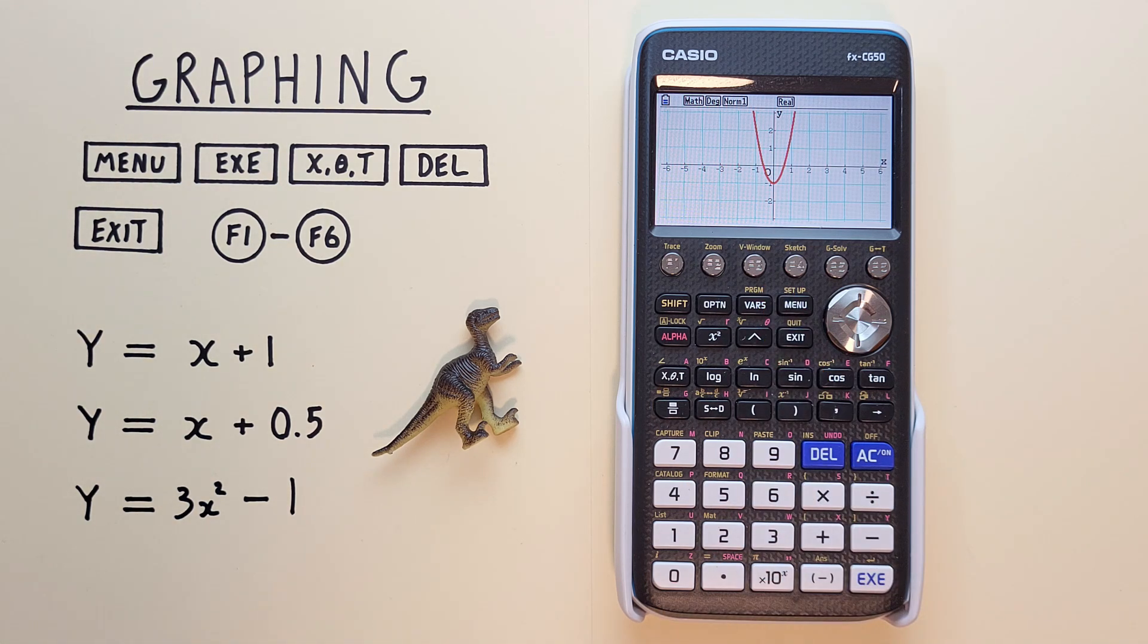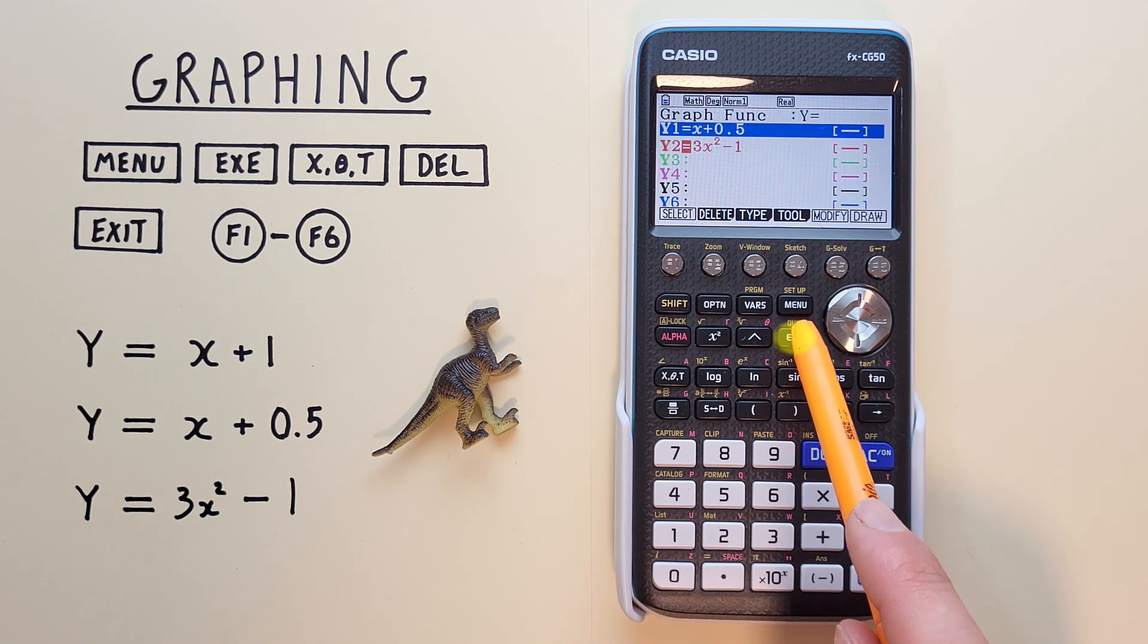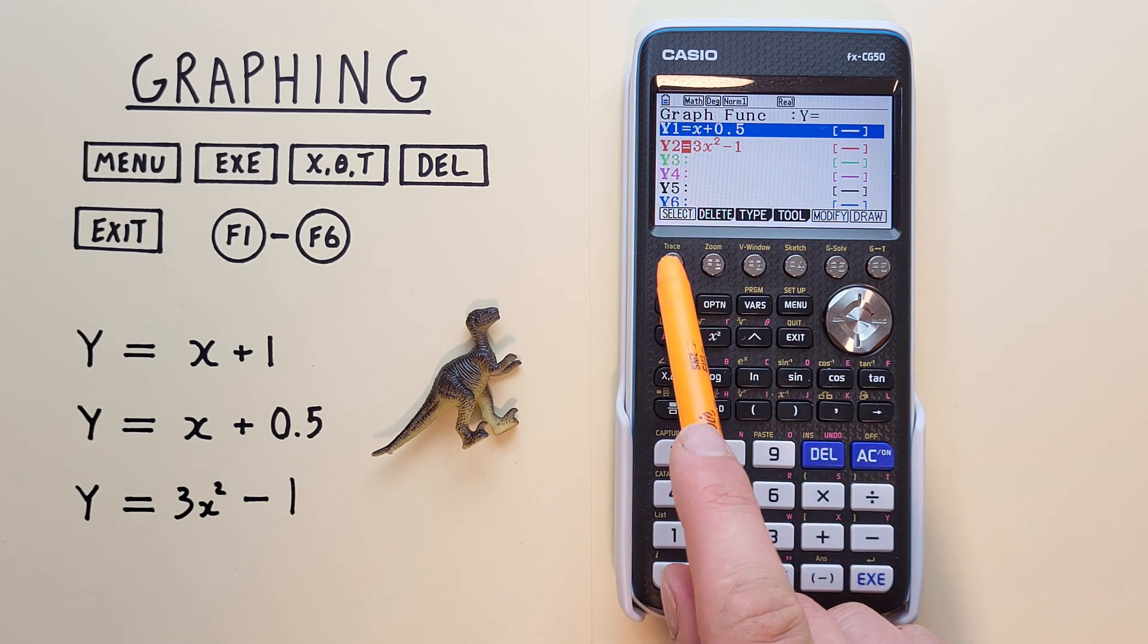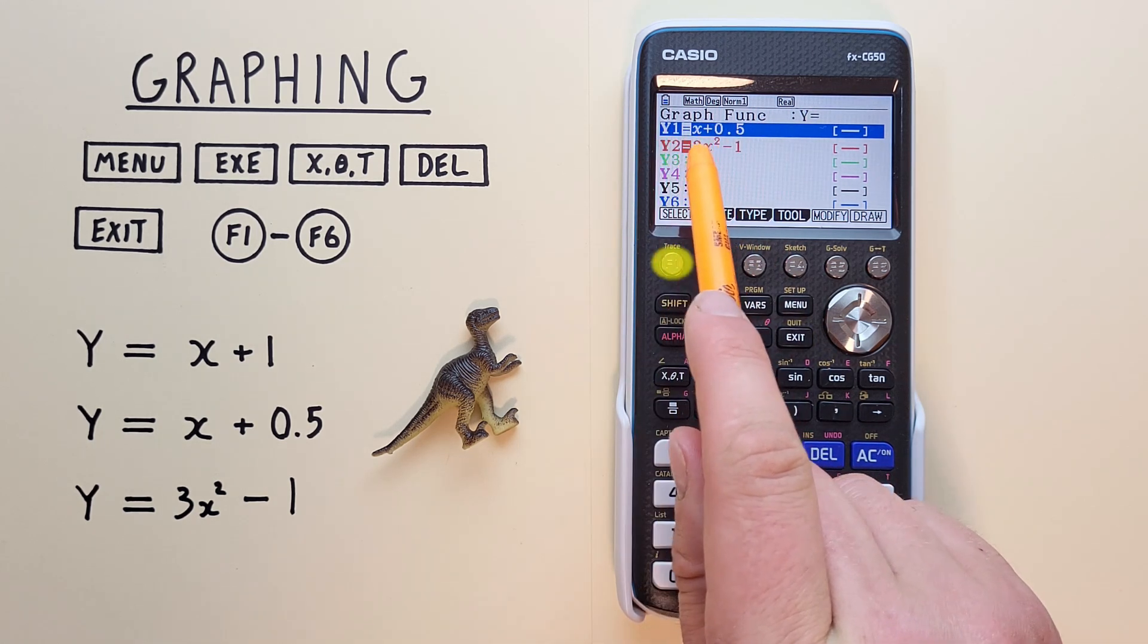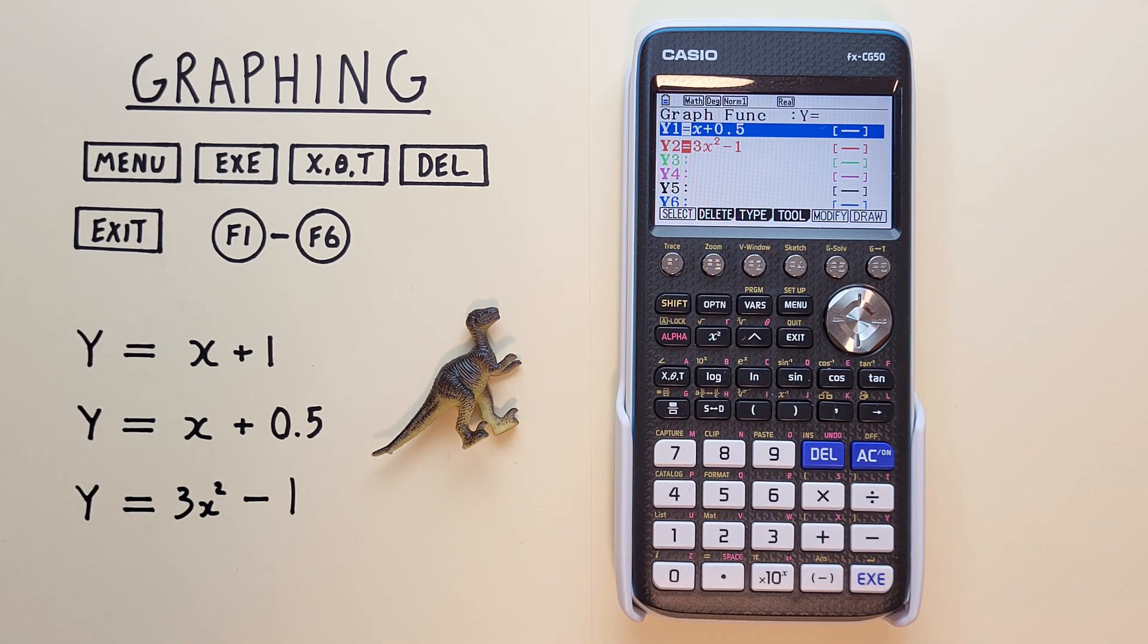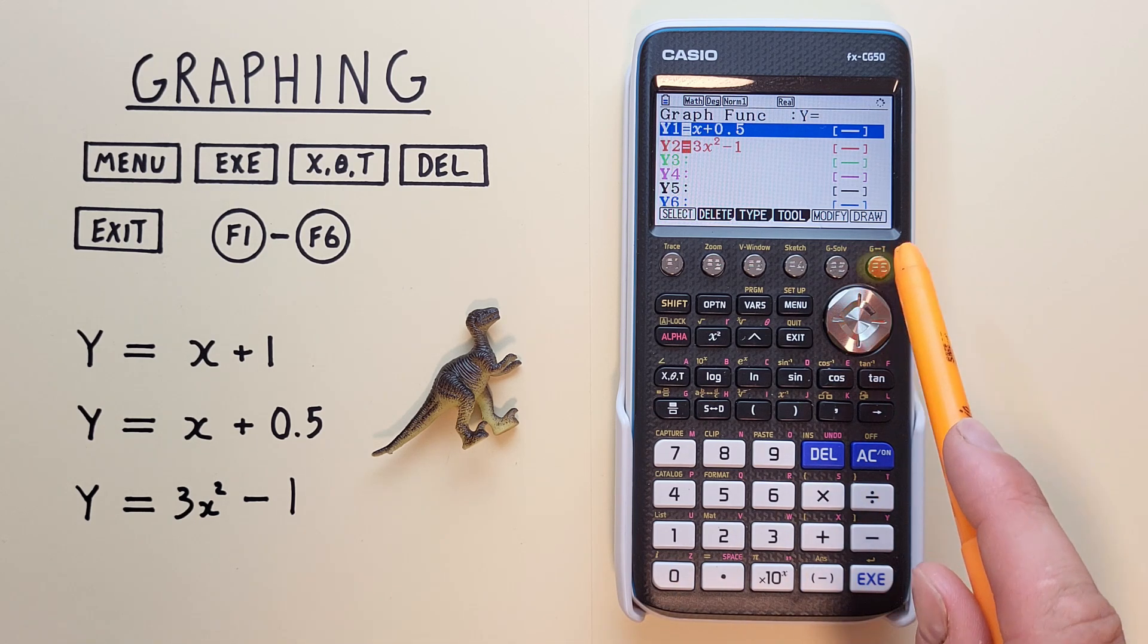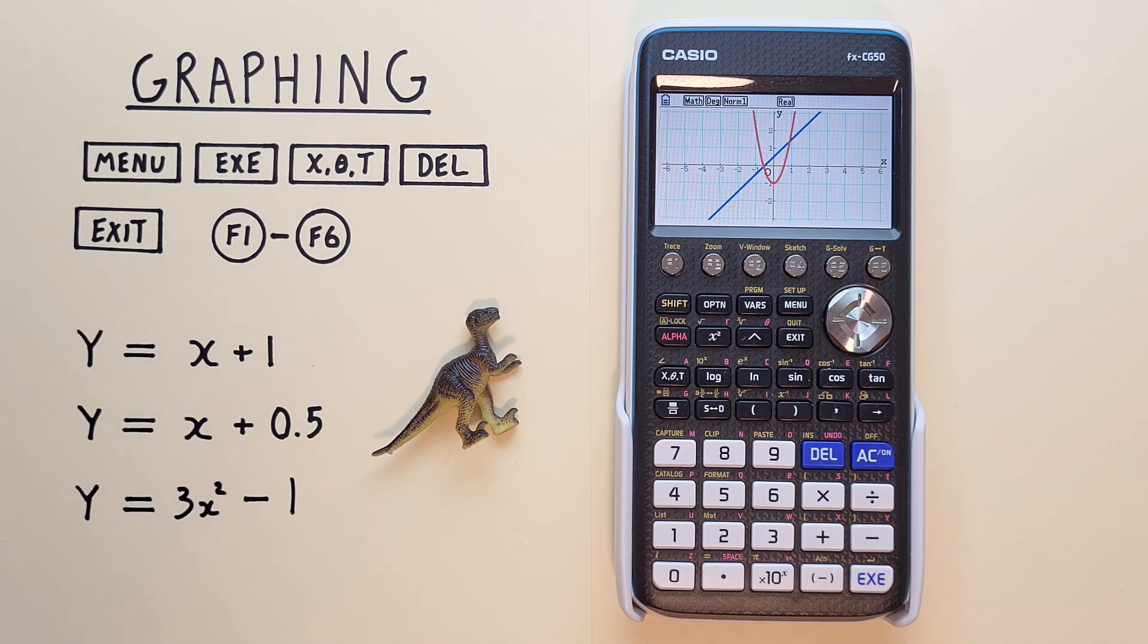To turn it back on, again, we go back with the exit key, highlight Y1, hit Select, so that the equal sign is turned on, and then go back to our graph, and we've got both functions back now.